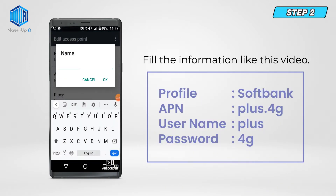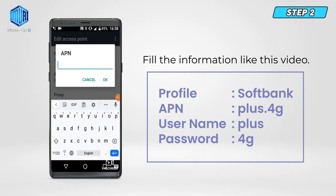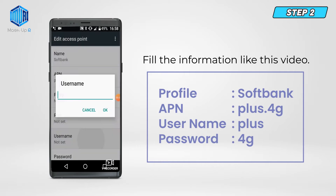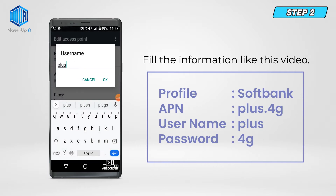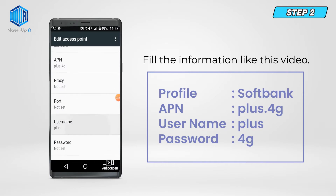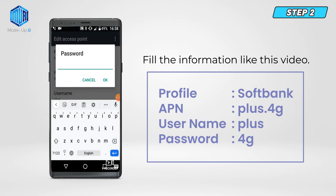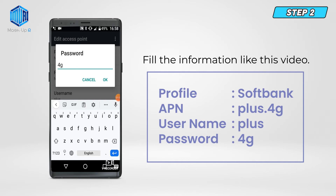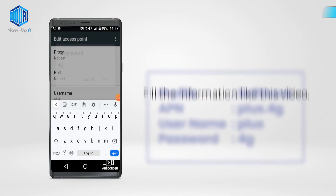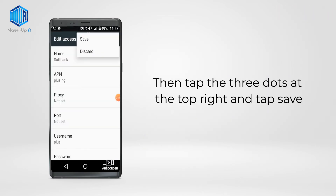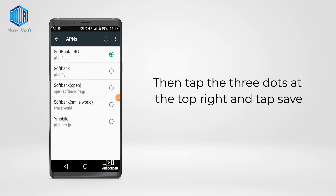Step 2. Fill in the information as shown in this video. Then tap the three dots at the top right, and tap Save.